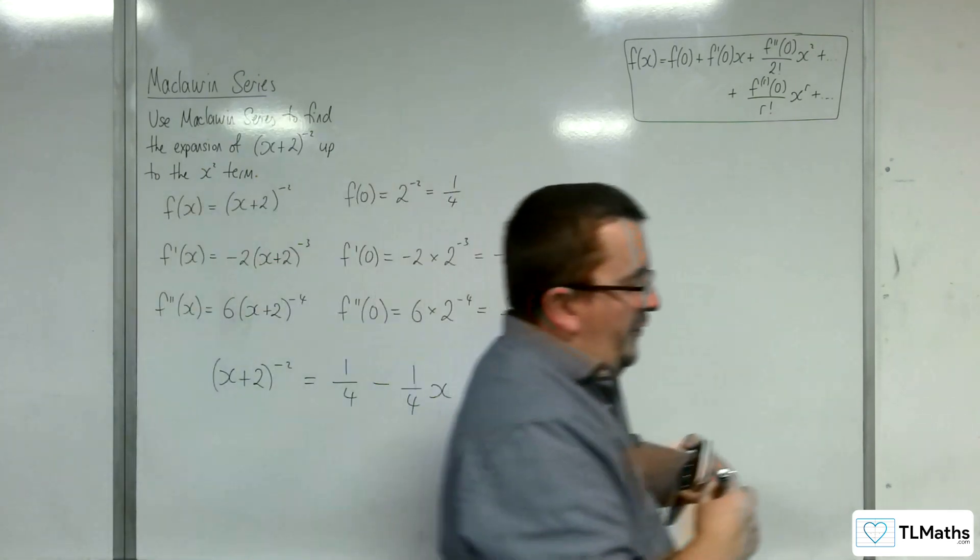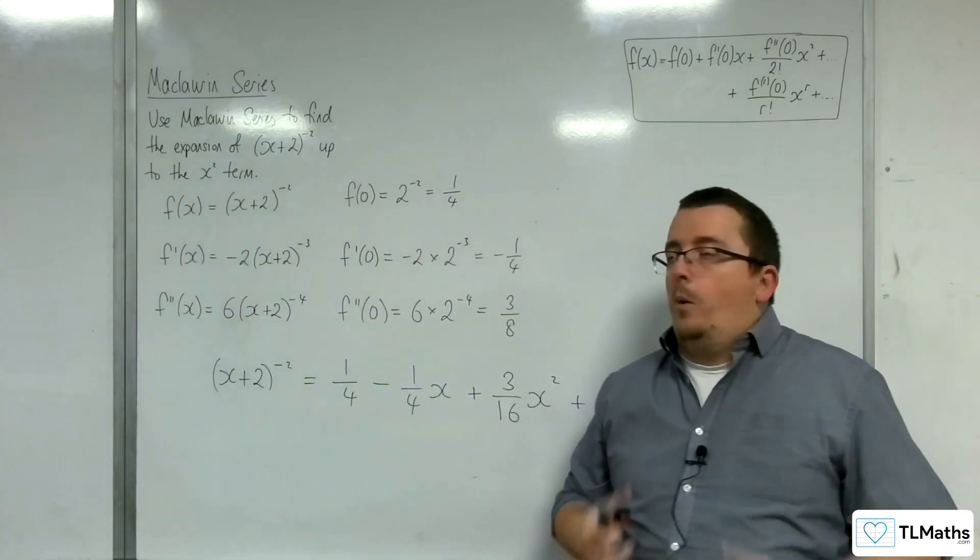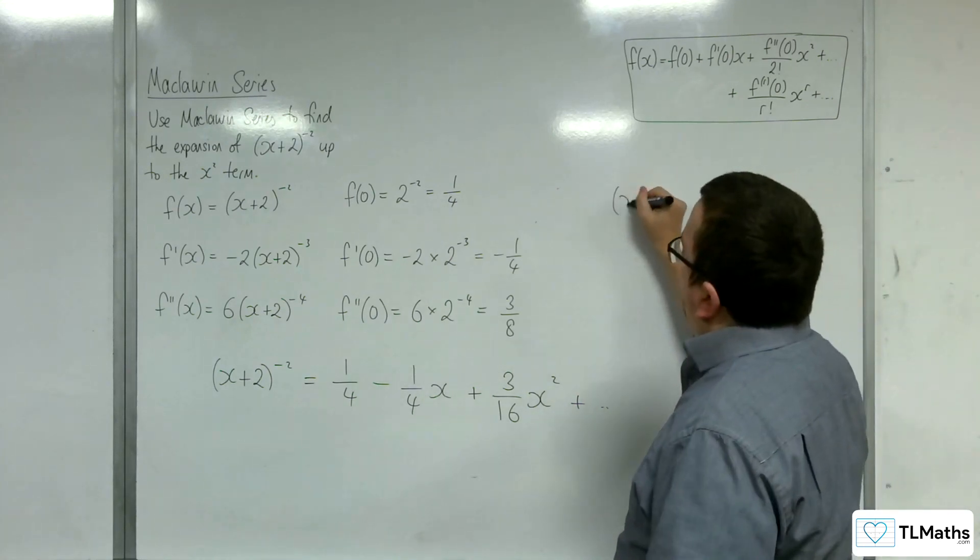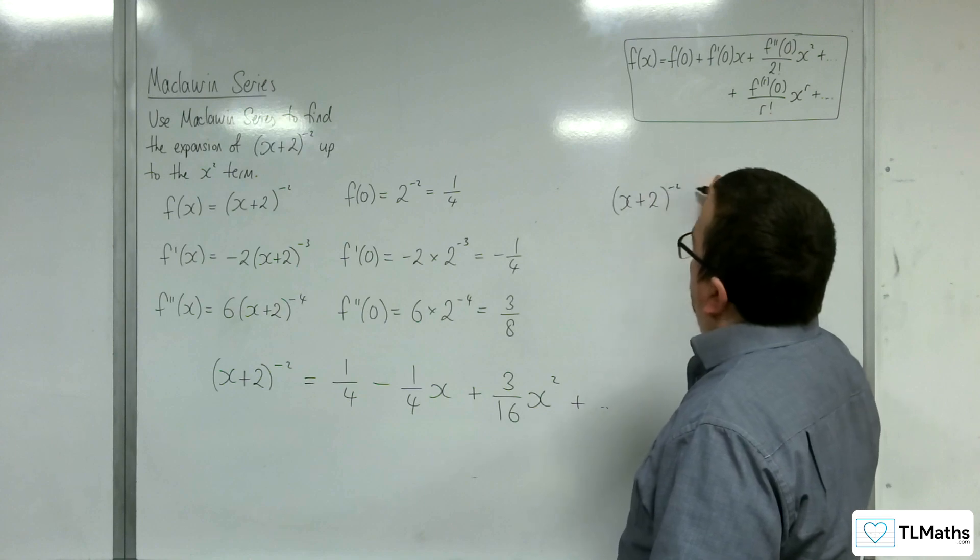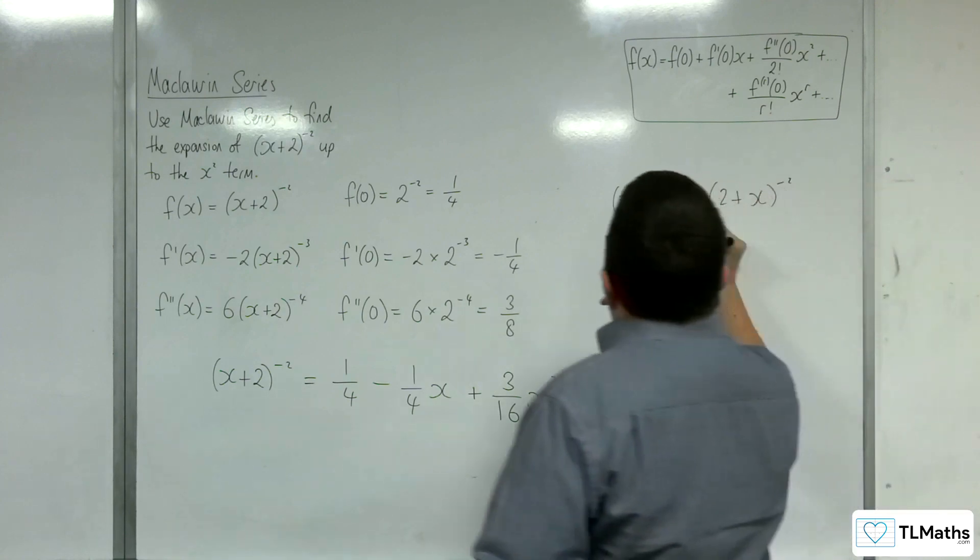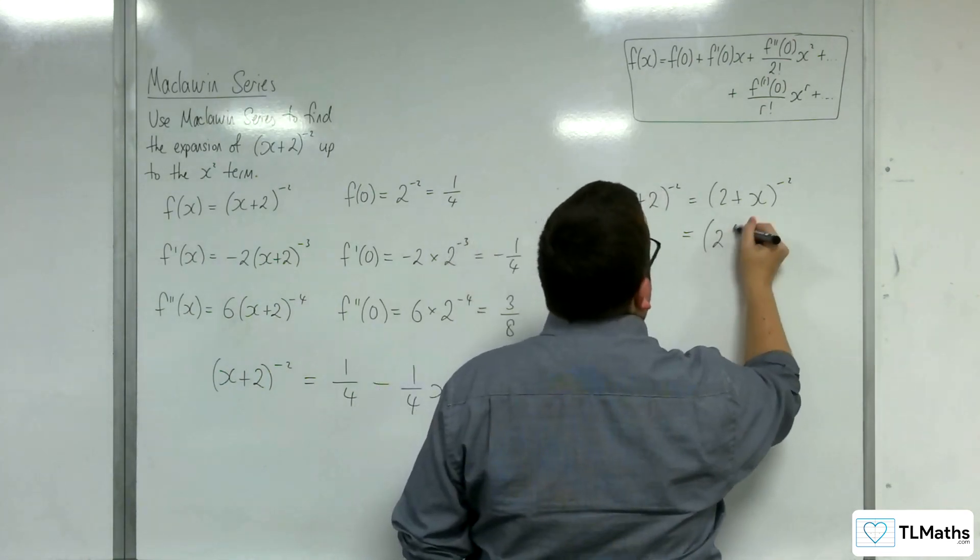Now, if I was also asked, well, for what range of values of x is it valid, then for that you need to remember that (x+2)^(-2). If you write that around this way first, and then factor the 2 out of the inside.